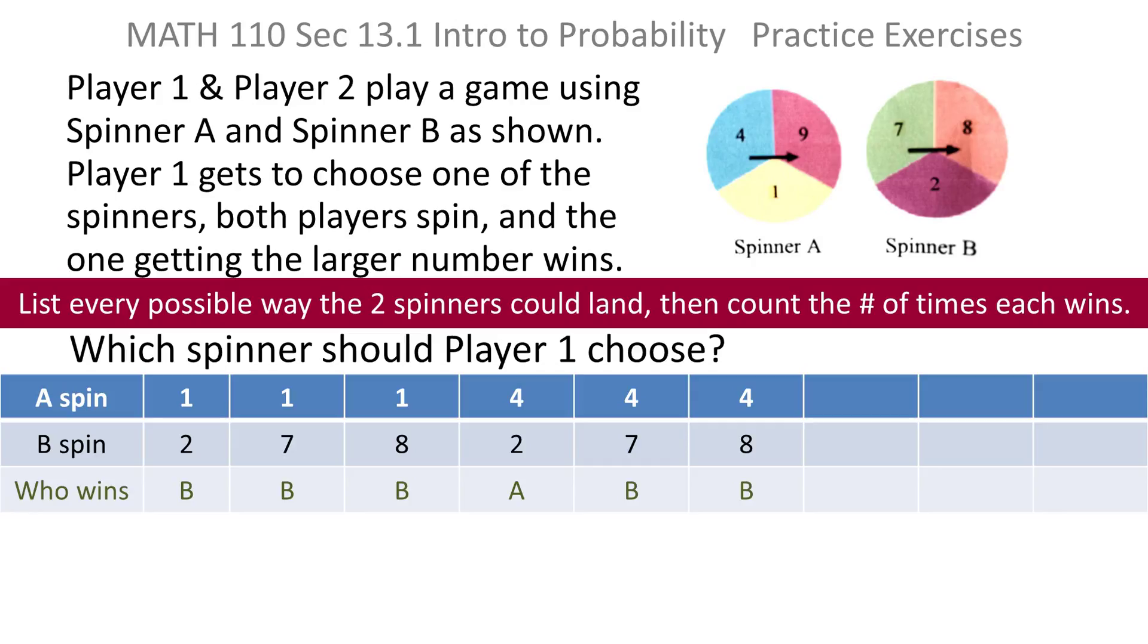What haven't I done? Well, I haven't matched a 9 on spinner A with anything, so I'll match the 9 with the 2. Now, 9 is bigger than 2, so spinner A wins.